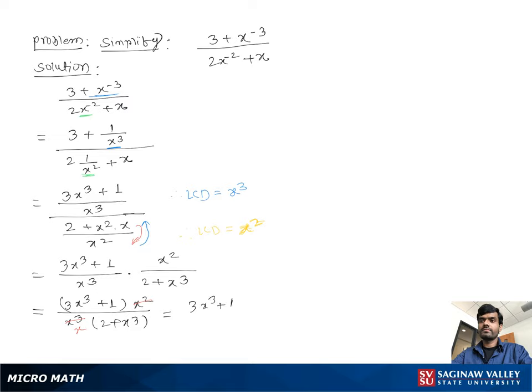Now we expand the denominator part so you can write one more step: 3x cube plus 1 over 2x plus x to the 4th where x is not equal to 0.